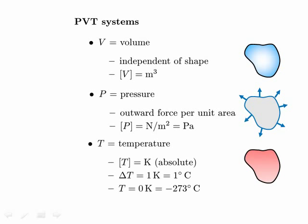Finally, there's T, the temperature. We're always going to be talking about the absolute temperature, measured in kelvins. A change of one kelvin equals a change of one degree Celsius, but the zero of kelvins is at absolute zero, which is minus 273 degrees Celsius. So zero kelvins is minus 273 degrees Celsius, and room temperature is about 300 kelvins.